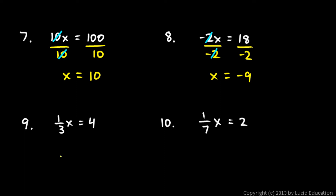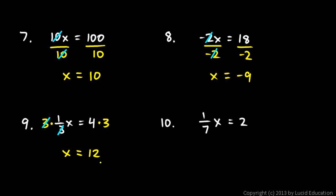Number 9 and 10 are a little bit different — we have a fraction this time. 1 third times x equals 4. I can get rid of this 1 third by multiplying by 3, because those 3s cancel out. That's in the numerator, so it will cancel, leaving me with x all by itself. If I multiply by 3 on the left, I have to multiply by 3 on the right. So those 3s on the left cancel, leaving me with x equals 4 times 3, which is 12.